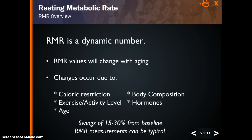RMR is a dynamic number and is impacted by several factors. Most people believe that age is a primary factor in changing their metabolism. While RMR values will slow with age, they won't change that much. The actual change in resting metabolic rate associated with age is about 2% per decade. So, from the age of 20 to the age of 70, an individual loses about 10% of their resting metabolic rate as a result of the aging process, which is not a significant number.